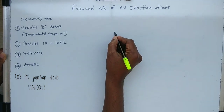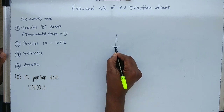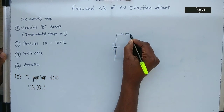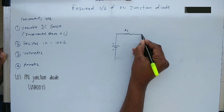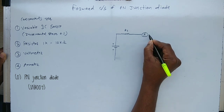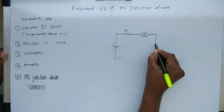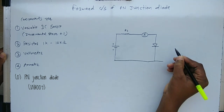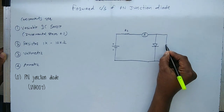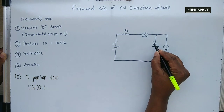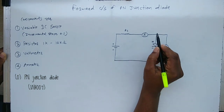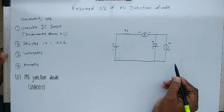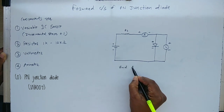Now the circuit diagram: DC power source, series resistance Rs, ammeter, and diode. This is the anode of the diode and cathode. The negative terminal of the ammeter is connected to the positive of the voltmeter. This is the circuit arrangement for forward bias.